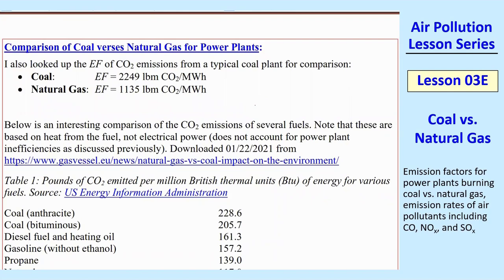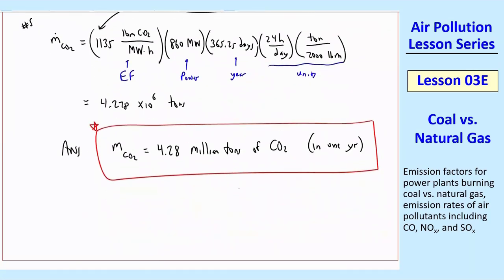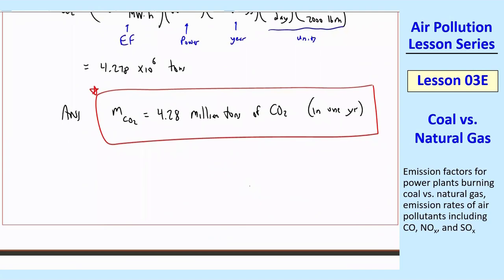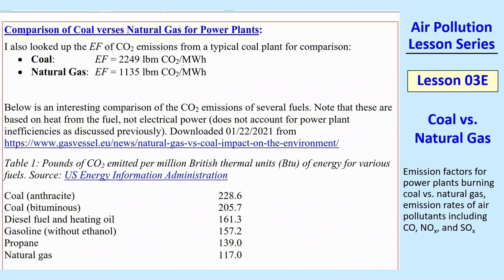That brings me to comparing coal versus natural gas for power plants. I looked up the CO2 emission factor for natural gas — that's what the problem used. There are still a lot of old power plants using coal. If you compare these two EFs, it's almost a factor of two: natural gas produces about half the CO2 that coal does. So in terms of greenhouse gases and global warming, methane is much better.